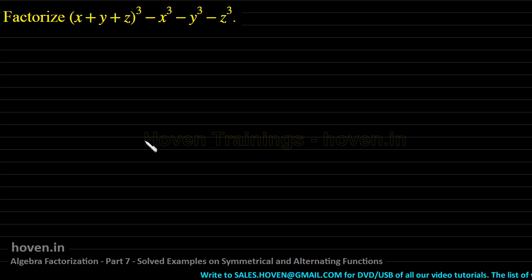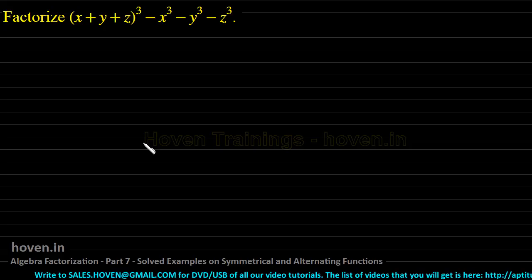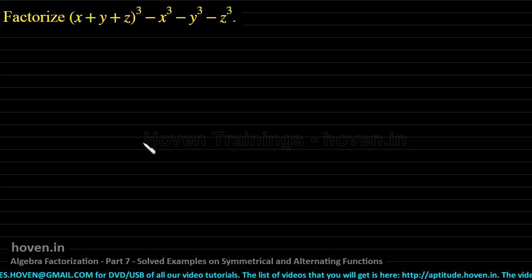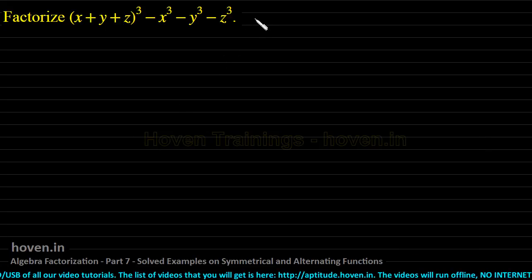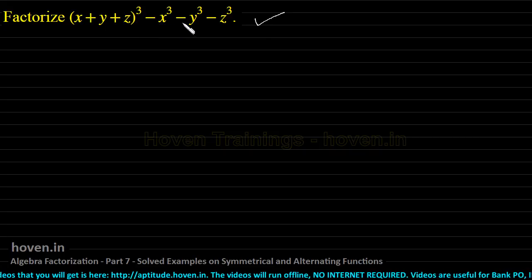Now in this lecture, we will put our knowledge to use and see how we can use the concept of symmetrical and alternating functions to factorize very complex expressions. We shall take some solved examples. This is our first example: factorize (x + y + z)³ minus x³ minus y³ minus z³.